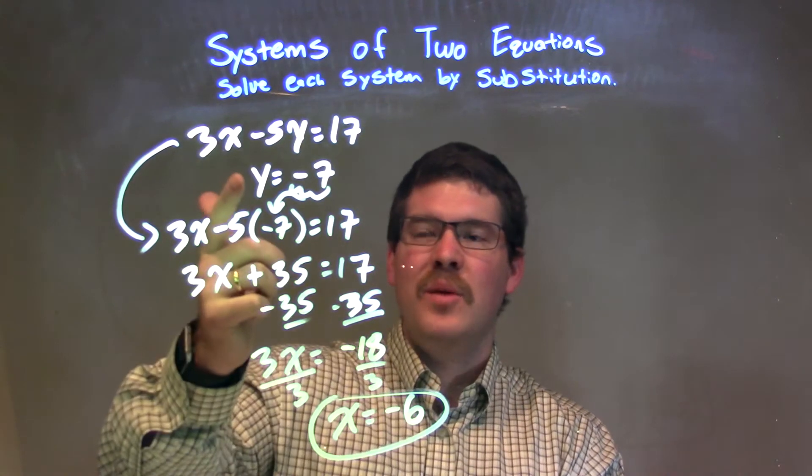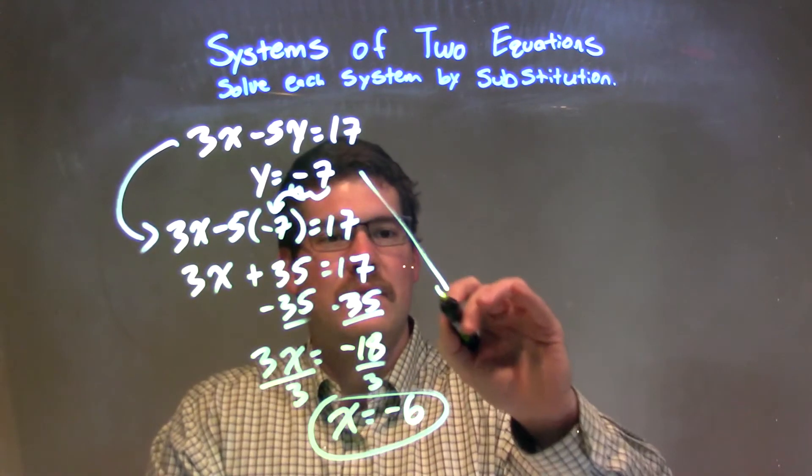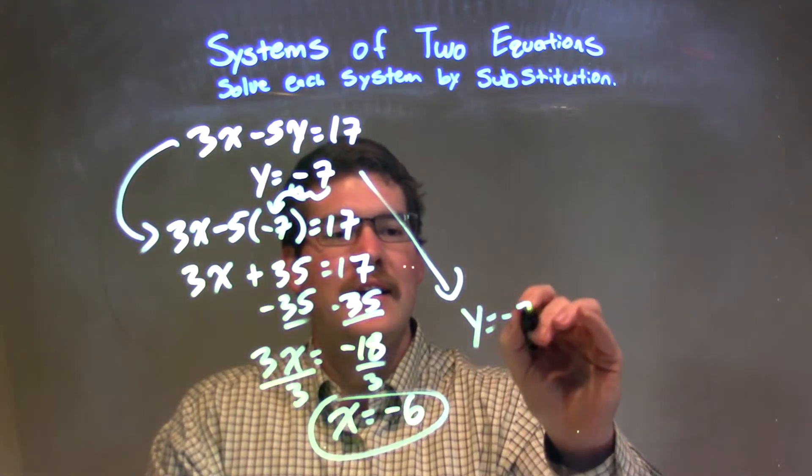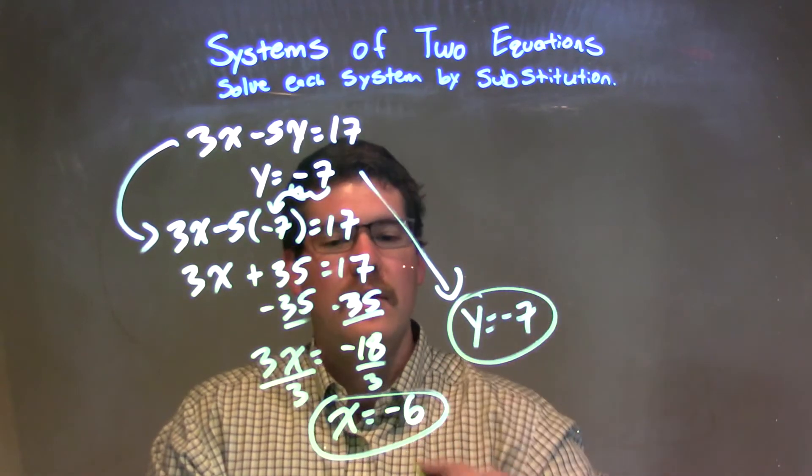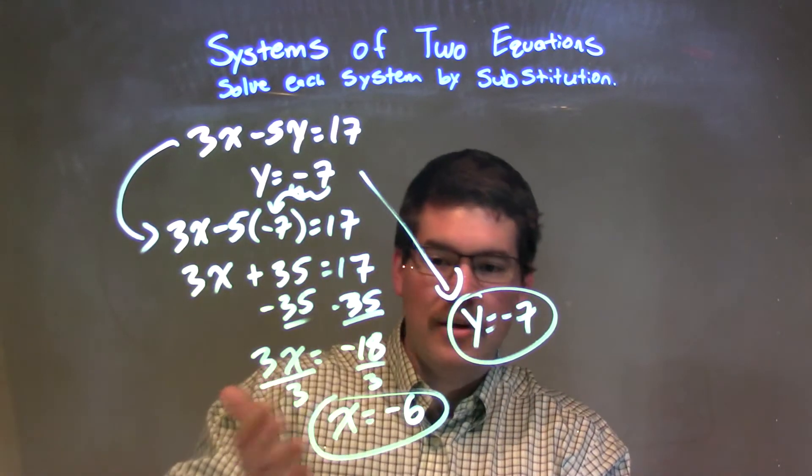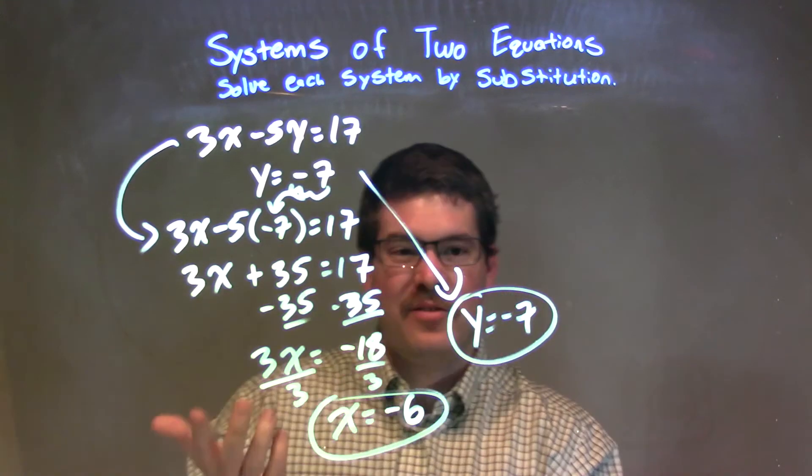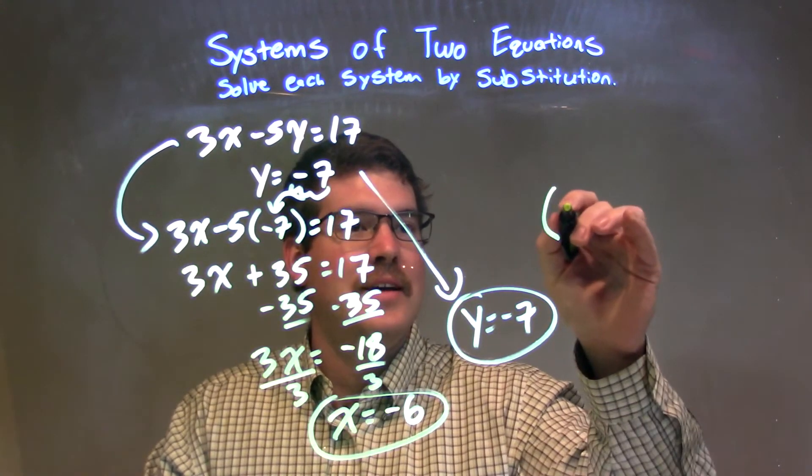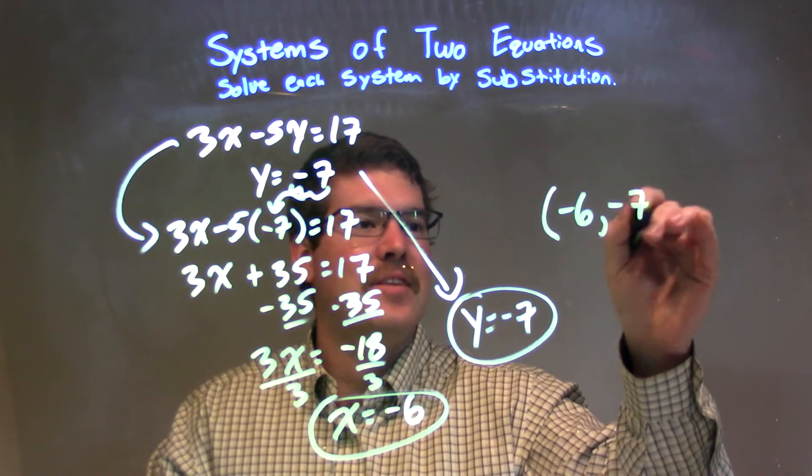Now, what's nice is we were already told that y is equal to negative 7 from the beginning. So we can combine the knowledge of these two parts together to get our final answer, which is just a coordinate point of negative 6 comma negative 7.